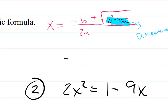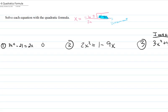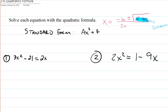We are going to do three examples together. Whenever we want to use the quadratic formula, the very first thing we're going to have to do is get the equation into standard form. In standard form, that is ax squared plus bx plus c, and we're going to set that equal to zero.